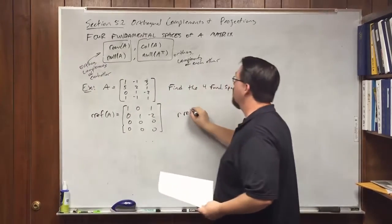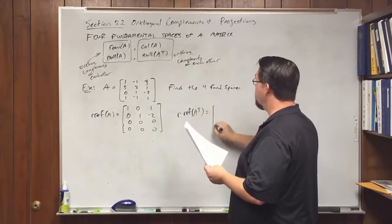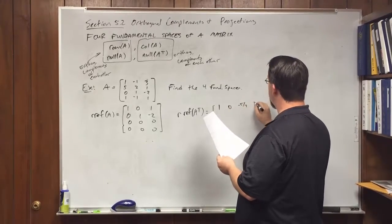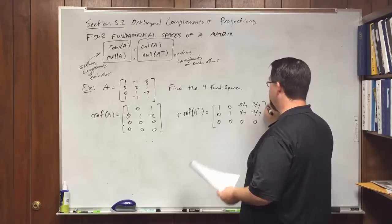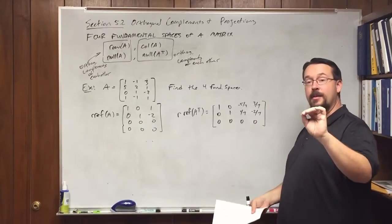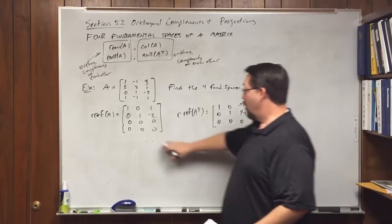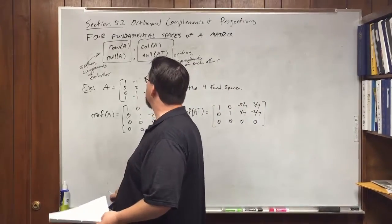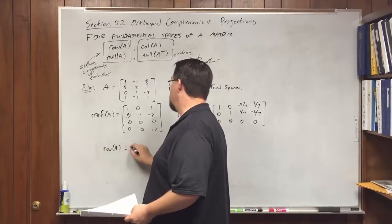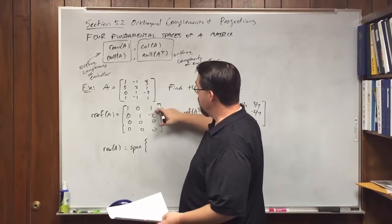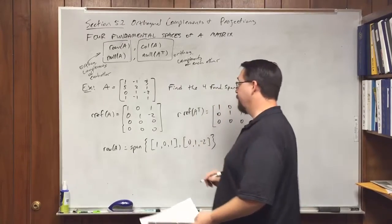To find the RREF of A transpose, take A, transpose it, then find its reduced row echelon form. That gives: 1, 0, -5/7, 3/7; 0, 1, 1/7, -2/7; 0, 0, 0, 0; 0, 0, 0, 0. The row space of A is simply the span of the two non-zero rows: {(1, 0, 1), (0, 1, -2)}.